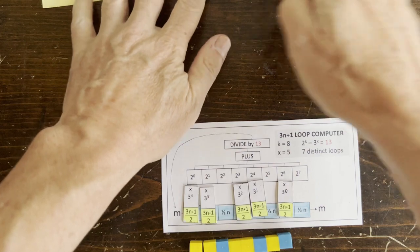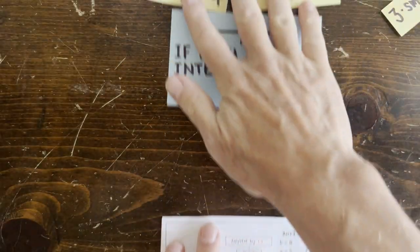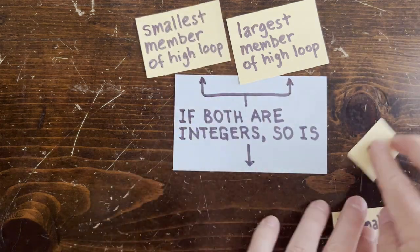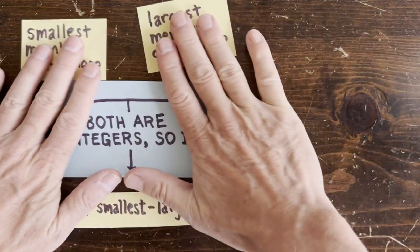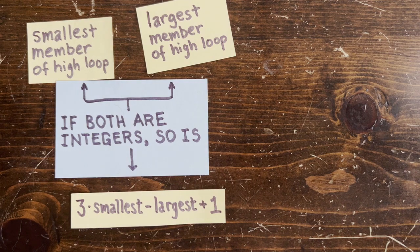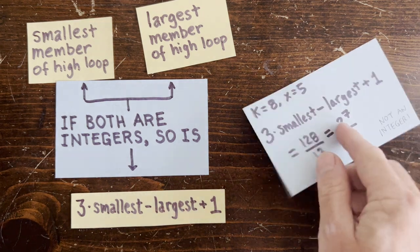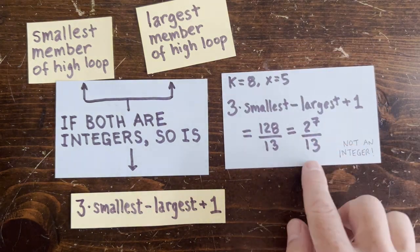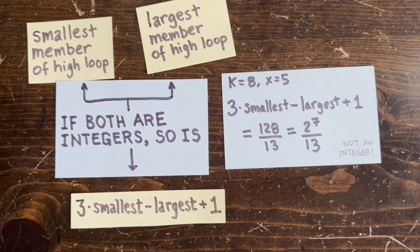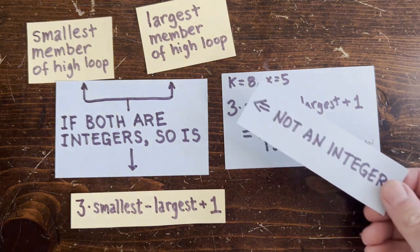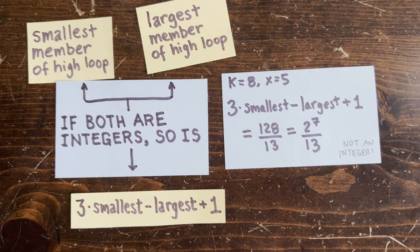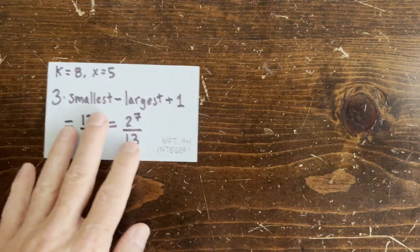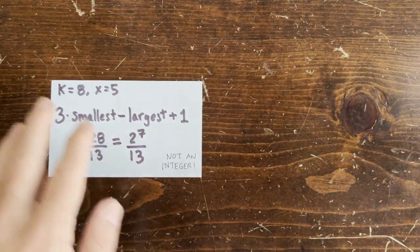I was very happy to find out the answer is no. Here's the idea: if the smallest member of the high loop is an integer and the largest member is also an integer, then their combination via this expression is obviously an integer as well. For this example, if we plug in the smallest and largest actual loop values, we get 2 to the 7th over 13. But this can't be an integer — 2 to the n can't be a multiple of some odd number. No matter what we multiply 13 by, we'll never obtain a power of 2. So we get a contradiction, and the original high cycle can't contain integers.